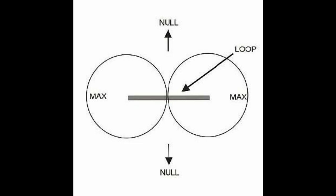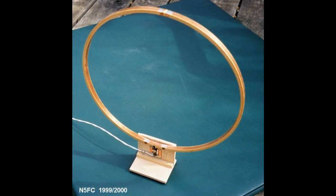Let's review the two things that guarantee good loop performance. And by good loop performance, I mean the classic definition of a perfect donut pattern with deep nulls, and the ability to null out offending stations, and with some capacitive effects isolation. Hopefully we get a little bit of noise rejection as well.